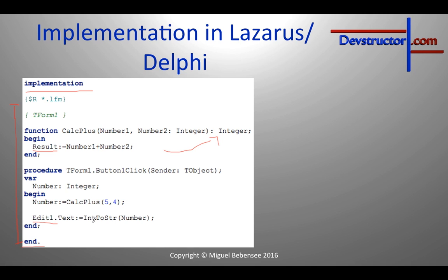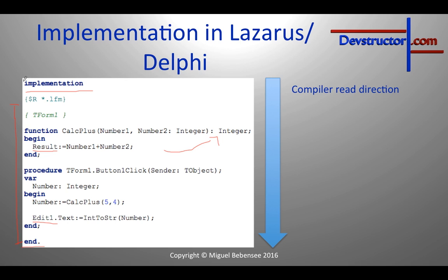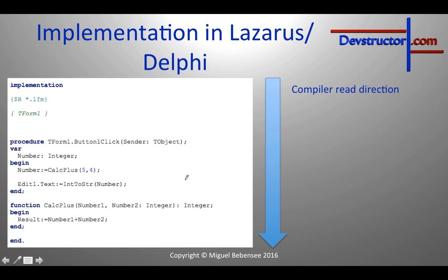It's important where you declare your function or procedure, because the compiler will read your source top to bottom. It will start at the top of the unit, go to the interface area, and then into the implementation area. In this example it starts with 'calculate plus' and then reads 'button one click'. You cannot swap them around, because if you do, the compiler starts with 'button one click' and will display an error message — it will not know what 'calculate plus' is.